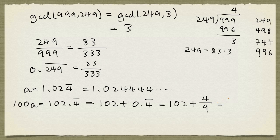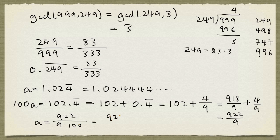And now we can add this. So this is 918 divided by 9 plus 4 divided by 9, which is 922 divided by 9. So 100a is 922 divided by 9. So a is 922 divided by 9 times 100 or 922 divided by 900.